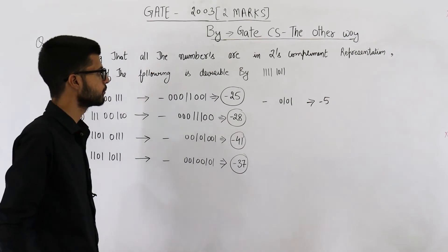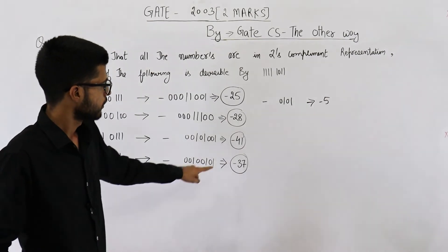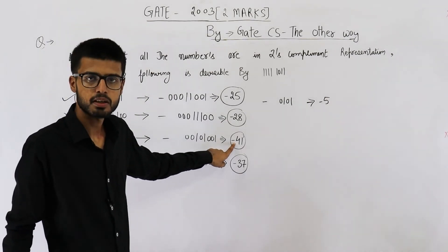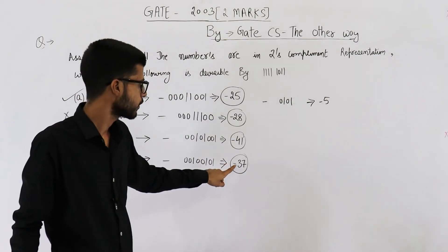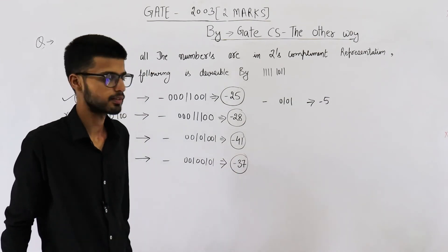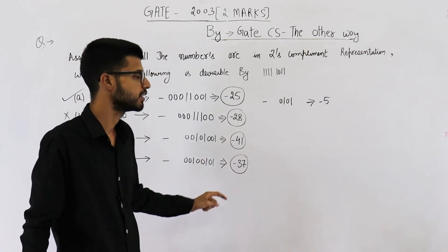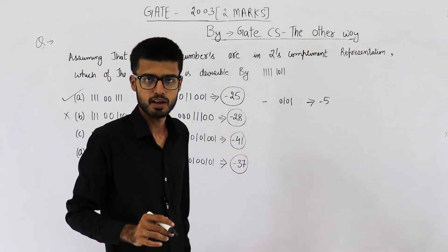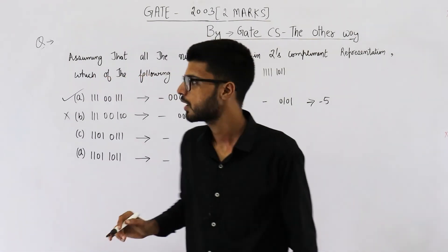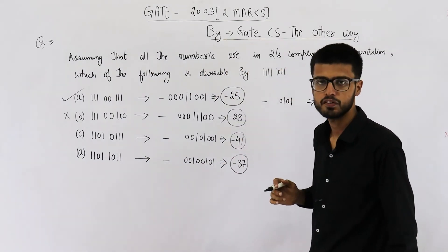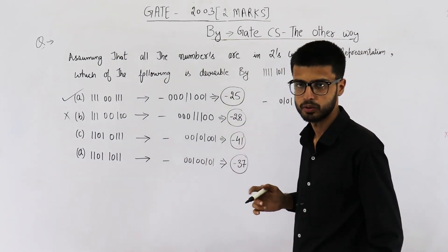Option C is minus 41 and option D is minus 37. Both of these are not divisible by five either. So the final answer is minus 25, which is option A.